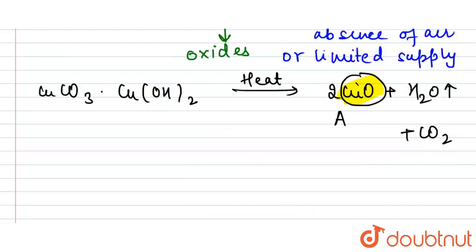For B, we are given reduction with carbon. The carbon reduction process is also known as the smelting process.